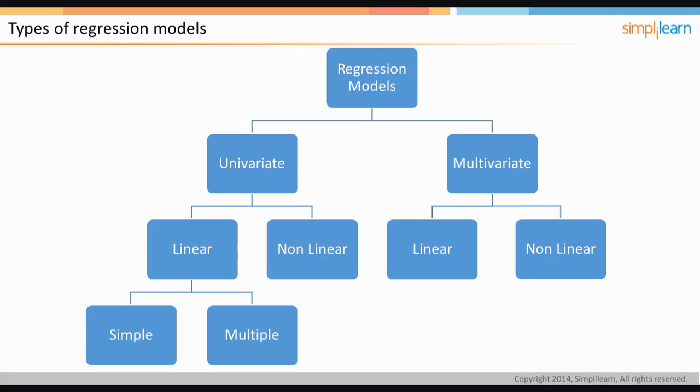The univariate linear regression is further divided into simple and multiple. Usually, more than one independent variable has an influence on the dependent variable. When one independent variable is used in a regression, it is called a simple regression. When two or more independent variables are used, it is called a multiple regression.